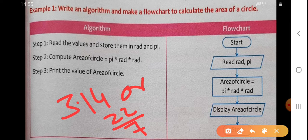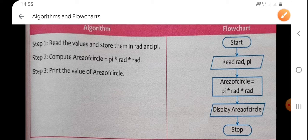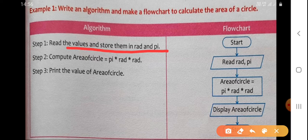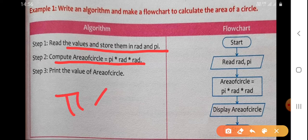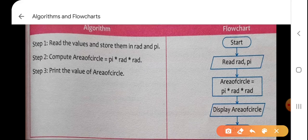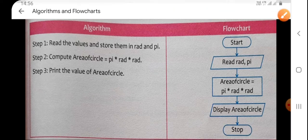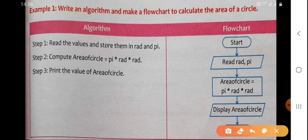Its value does not change, but using a variable here won't make a difference since we know the value of pi. The first step is to read and store values in 'rad' and 'pi'. The next step is to compute the area of a circle using the formula pi into radius into radius. The third step is to print the value of the area. Now let's look at the flowchart — we always start with the start box.